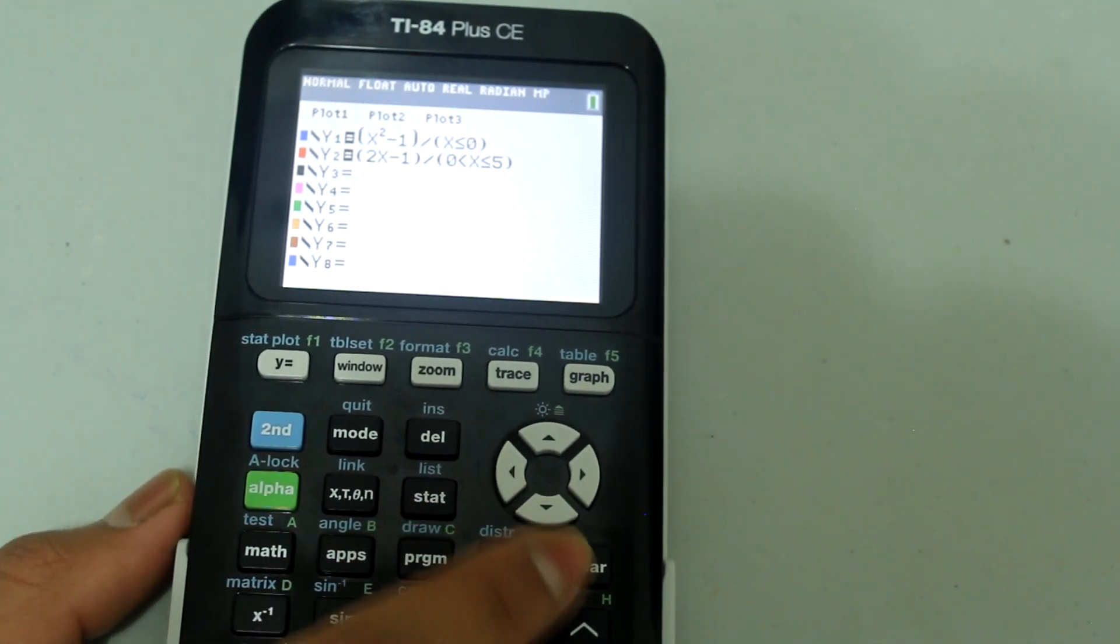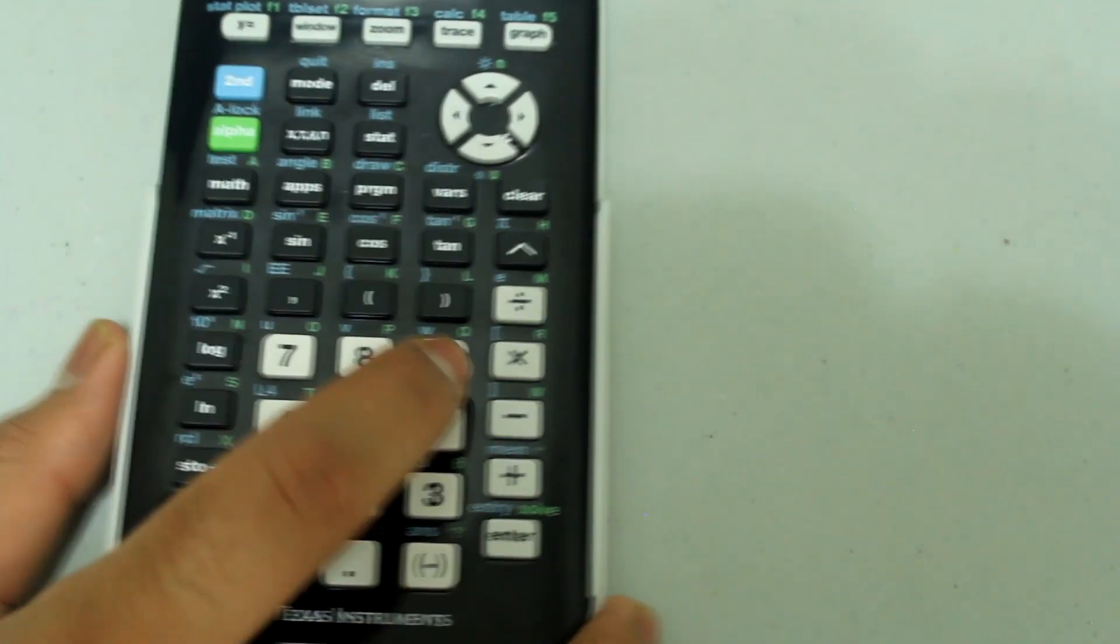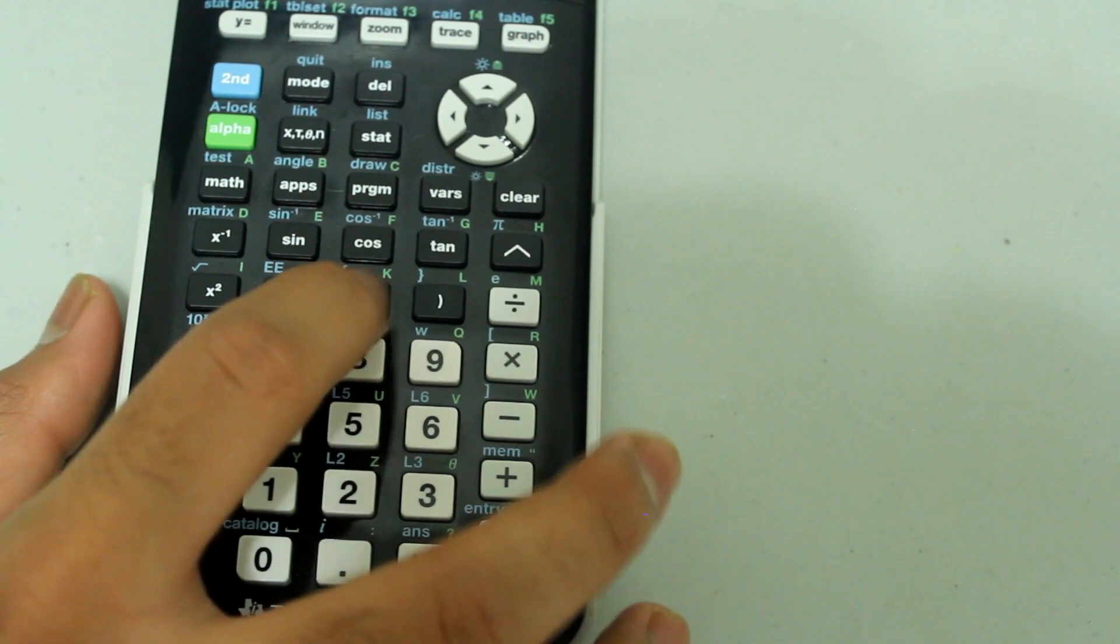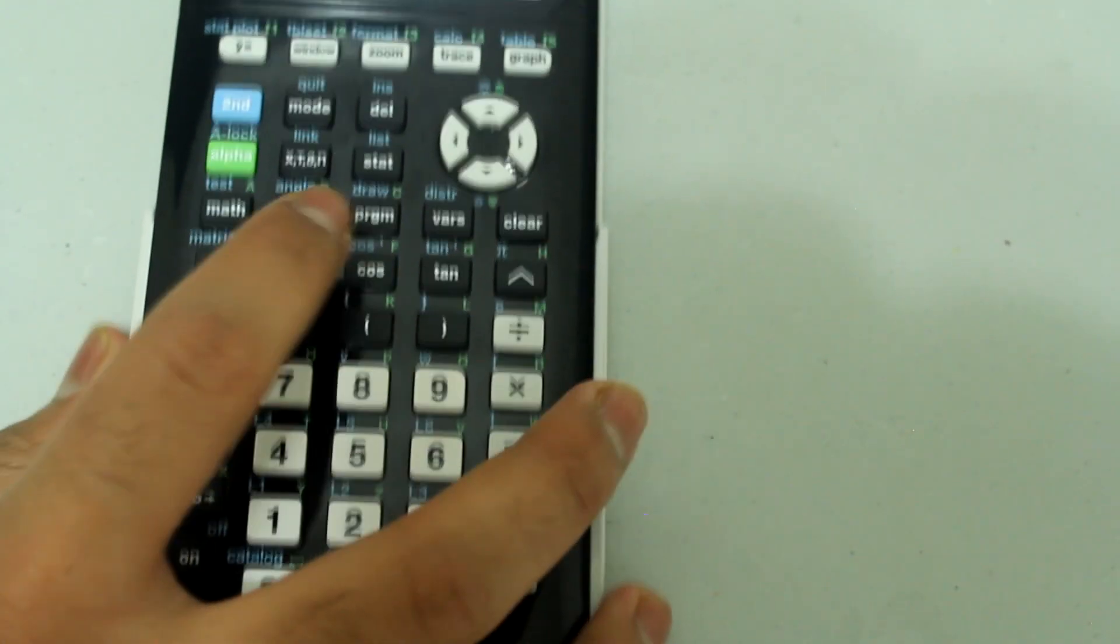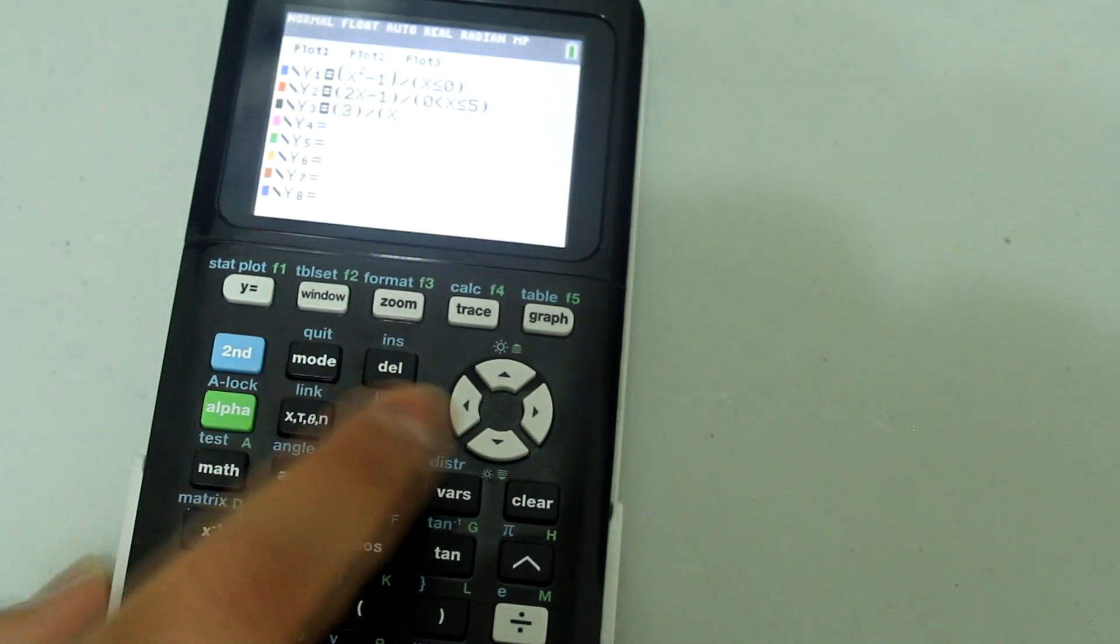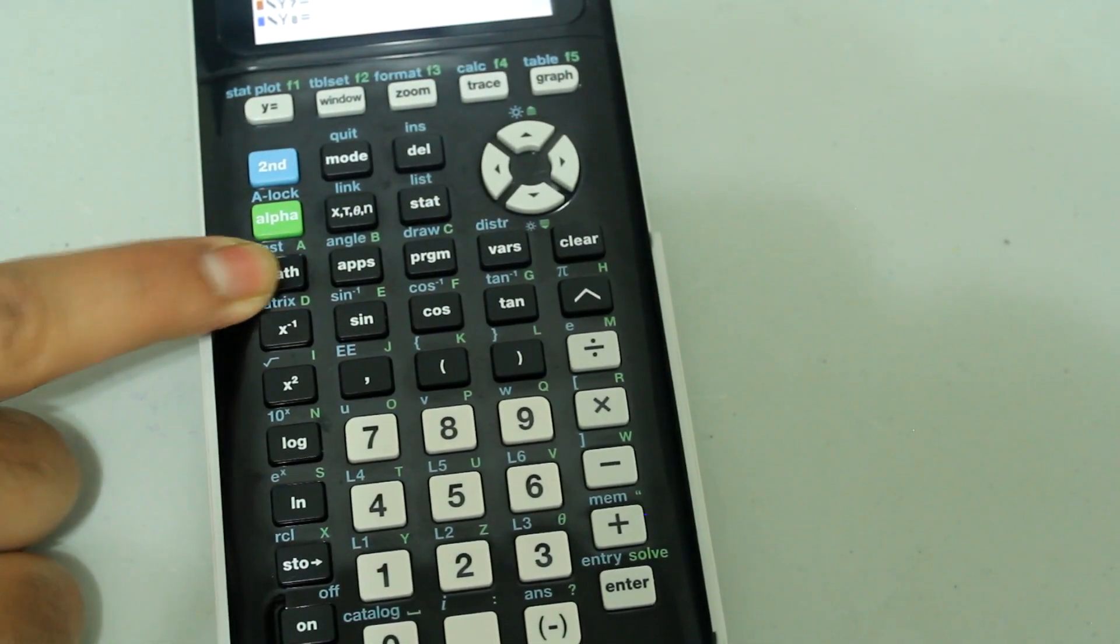And we're going to type in 5 and close the parenthesis. Go down to y3 equals, open a parenthesis, type in 3, close that parenthesis, divide.